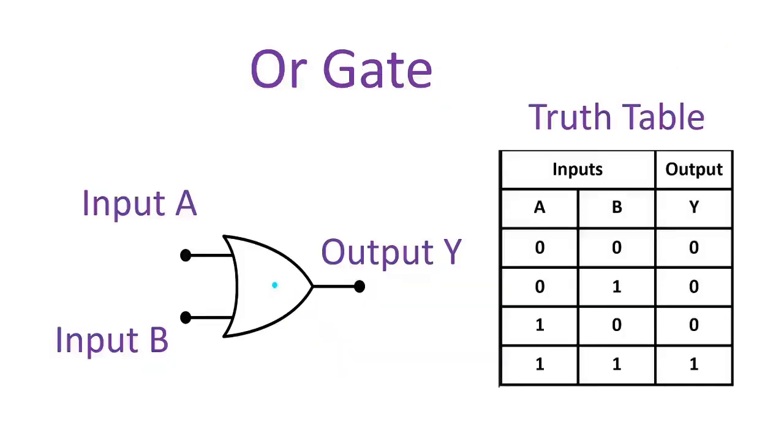And for the OR gate, it behaves according to the truth table. The output of OR gate is true if either of the two inputs are true, otherwise it's false.